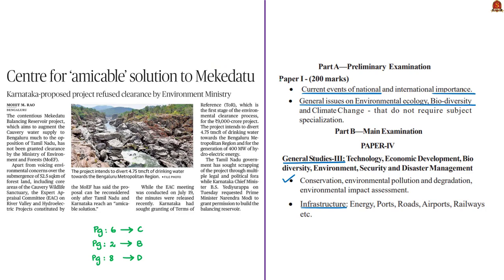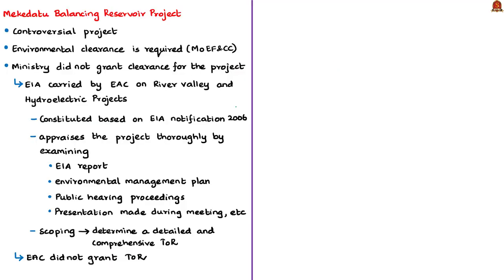The next news article is about the Mekedatu balancing reservoir project, a contentious and controversial project. It aims to augment Kaveri water supply to the metropolitan city of Bengaluru in Karnataka, and is opposed by Tamil Nadu. Mekedatu is a place in Karnataka along the river Kaveri; since the proposed reservoir location is at Mekedatu, the project is called the Mekedatu project. River Kaveri is an interstate river — it originates in Karnataka and drains into the Bay of Bengal after passing through Tamil Nadu, which is why Tamil Nadu opposes the construction.